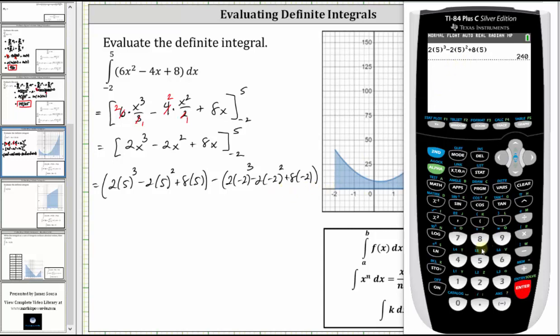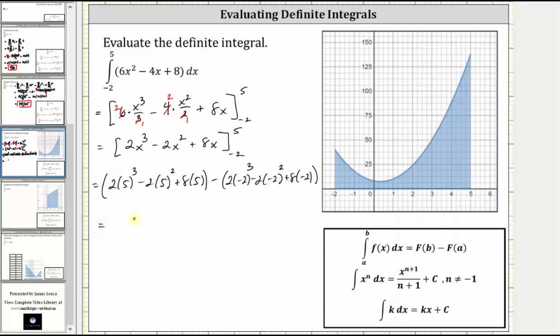And now let's determine big F of negative 2, which is negative 40. So this simplifies to 240 minus negative 40, which is equal to 240 plus 40, which is equal to 280.